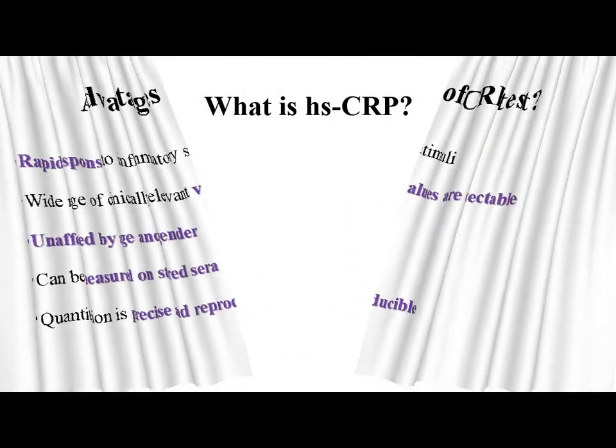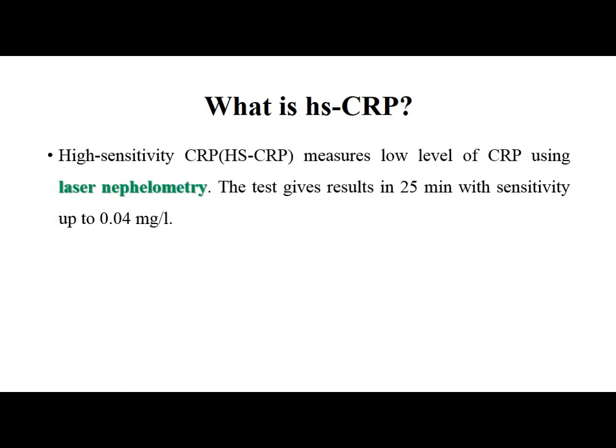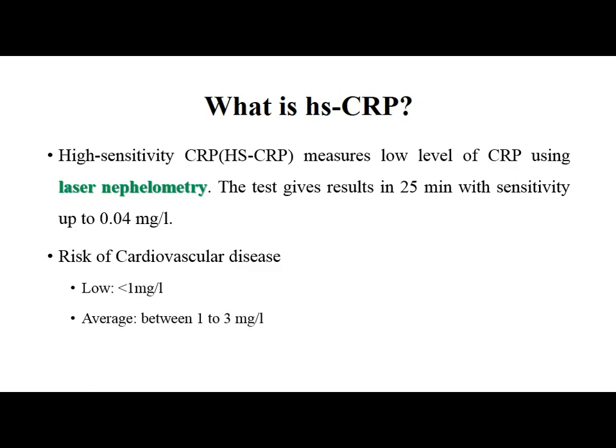HSCRP stands for High Sensitivity CRP. The measurement of low levels of CRP using laser nephelometry is known as HSCRP. The test gives results in 25 minutes with a sensitivity of up to 0.04 mg per litre, and is used to assess the risk of cardiovascular disease and damage to the vascular endothelium. HSCRP along with lipid profile and coagulation profile helps in the assessment of cardiovascular disease. Risk is low when the value is less than 1 mg per litre, moderate between 1 to 3 mg per litre, and very high when above 3 mg per litre.